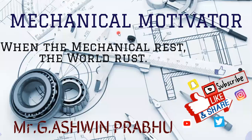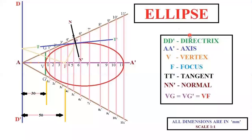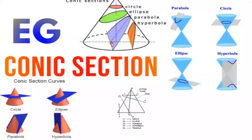Hello friends, welcome to our channel Mechanical Motivator. In this video we're going to see the construction of an ellipse. Before going into the video, we'll have a quick brush-up of the concepts. This is a cone — the topmost part is called the apex, this part is called the generator of the cone, and this is called the axis of the cone.